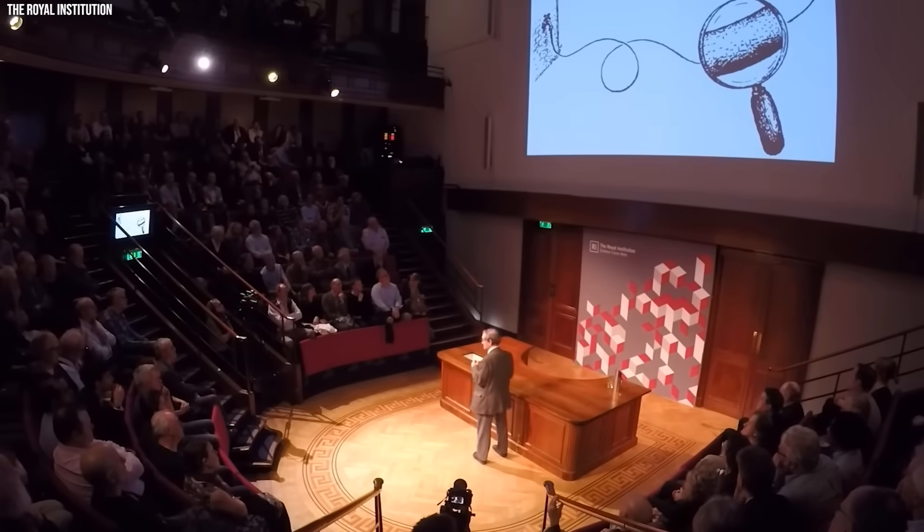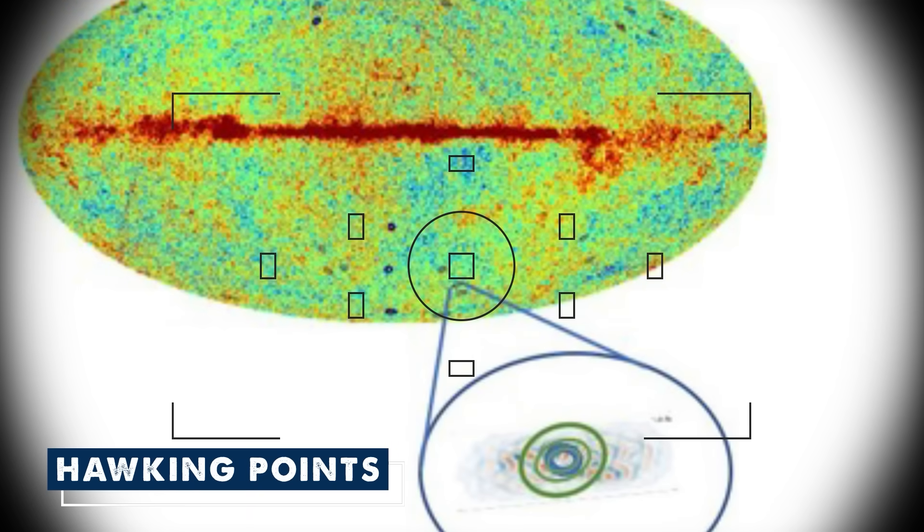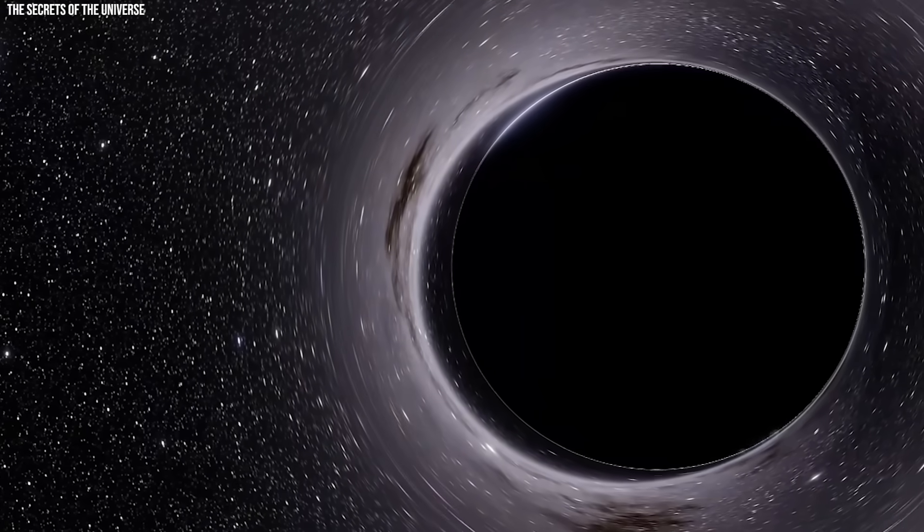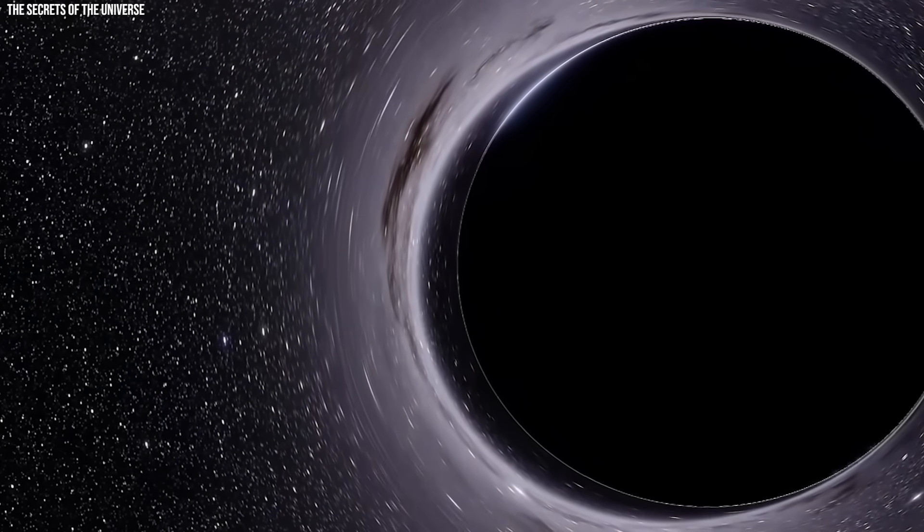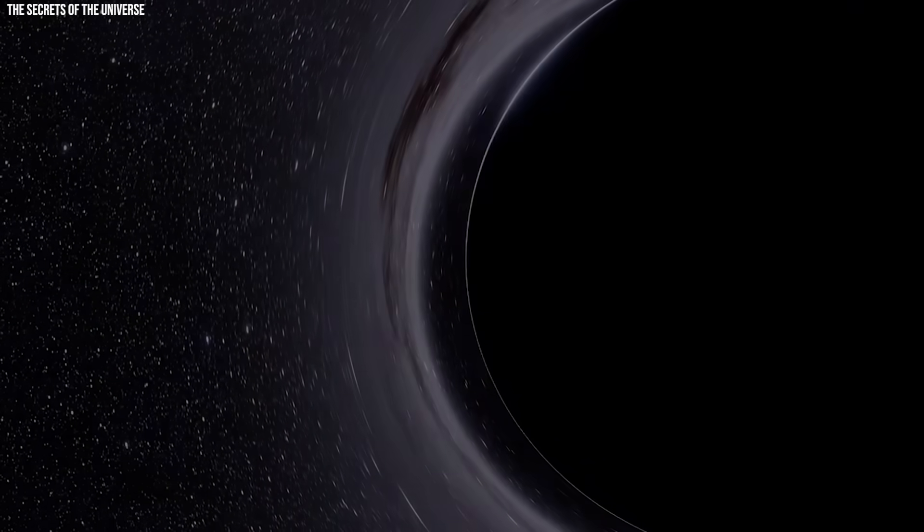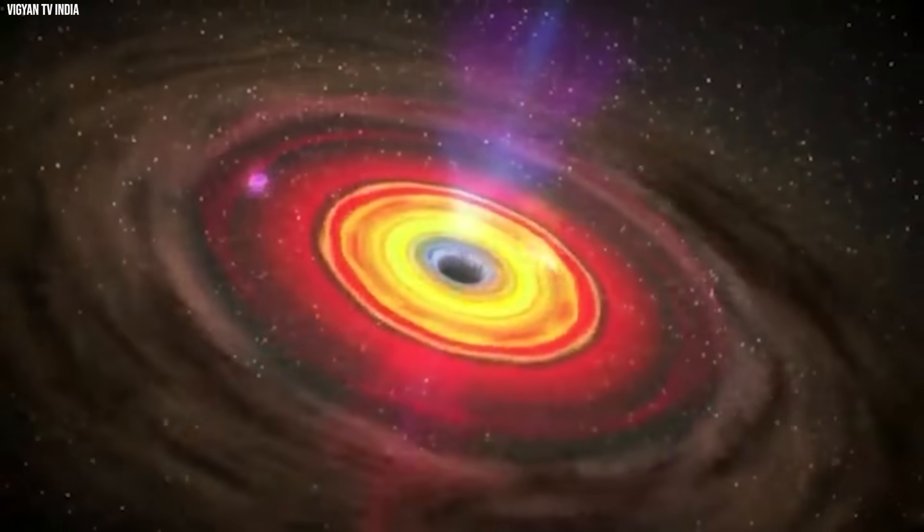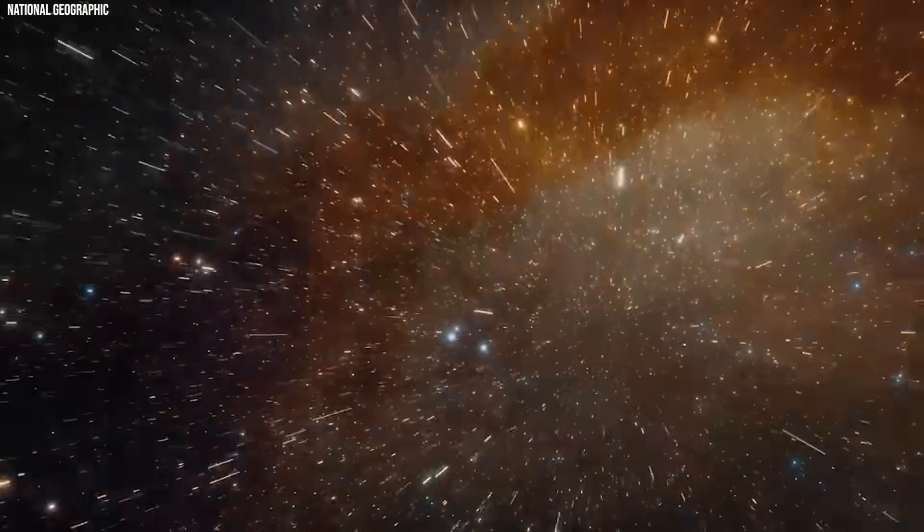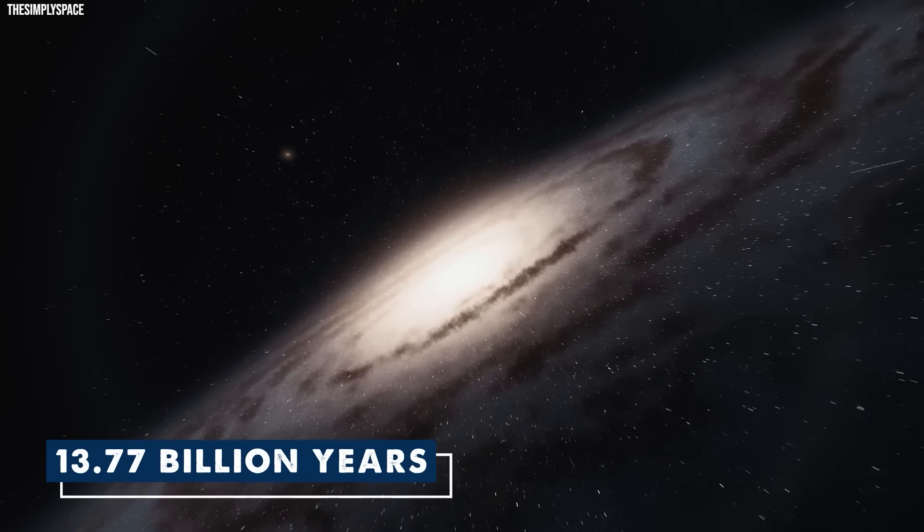Sir Roger Penrose claims the discovery of six warm sky points, known as Hawking points, each approximately eight times larger than the moon's diameter. Named after the late professor Stephen Hawking, who proposed the idea that black holes emit radiation and eventually evaporate, these points suggest the potential existence of such holes, even though spotting them is improbable within the current universe's age of 13.77 billion years.